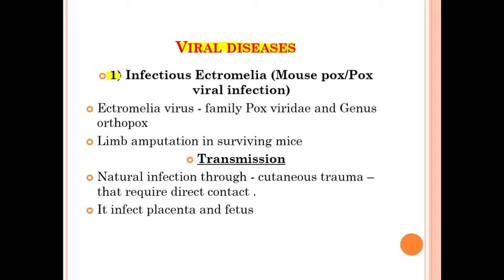The first viral disease is infectious ectromelia, also known as mouse pox or pox viral infection. The causative agent is the ectromelia virus of family Poxviridae, genus Orthopox. Limb amputation is seen in the surviving mice. Transmission occurs through natural infection via the cutaneous trauma route, requiring direct contact. If it infects the placenta, infection also occurs in the fetus.